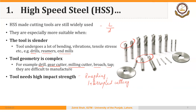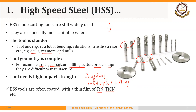We can also coat HSS tools with a thin film of, for example, titanium nitride or titanium carbon nitride in order to increase surface hardness. At the cutting edge, higher hardness is needed, while at the core of the tool, higher toughness is needed. By coating HSS cutting tools at the surface or cutting edge, we can achieve both better toughness at the core and better hardness at the surface — getting the best of both properties.